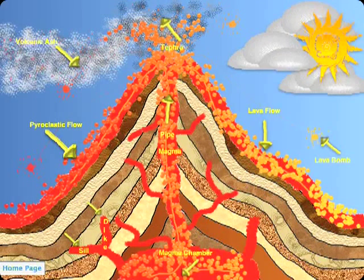Hello, this is Mikayla LaMance. Here's my volcano diagram. This is a magma chamber — it holds magma. Volcanoes also have sills and dikes. It also has a magma pipe. When it explodes, you can see lava bombs, lava flow, pyroclastic flow, volcanic ash, and tephra.